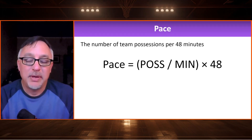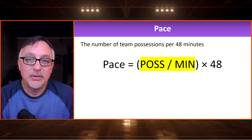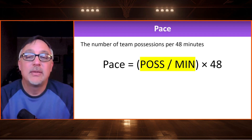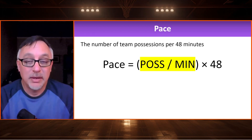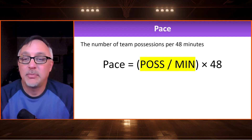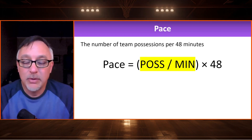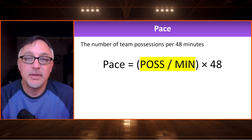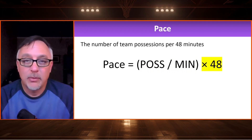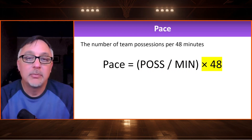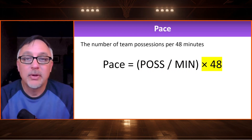Now we have pace. This is simply the number of possessions divided by minutes — MIN is the number of minutes in that game, usually 48, but could be 53 for one overtime or 58 for two overtimes and so on. If we multiply by 48, that gives us the number of possessions per game, which is called the pace.